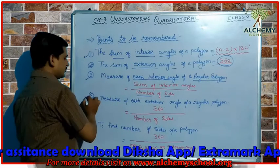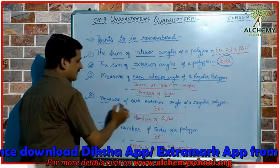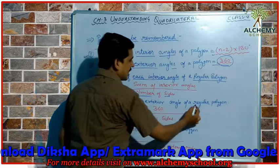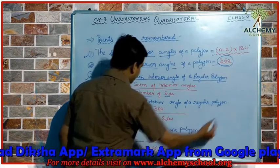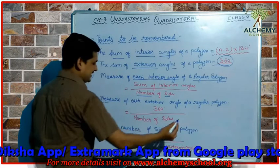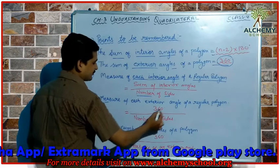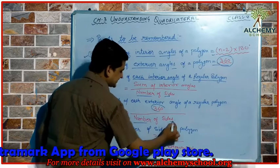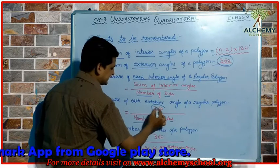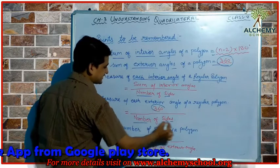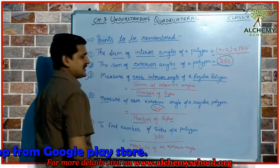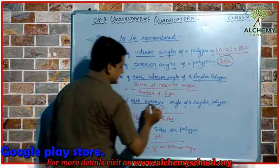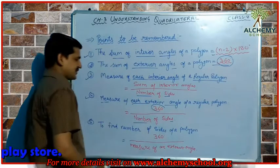The next point is the measure of each exterior angle of a regular polygon. To find it, we divide 360 by the number of sides. When we divide 360 by the number of sides, we get the measure of each exterior angle.